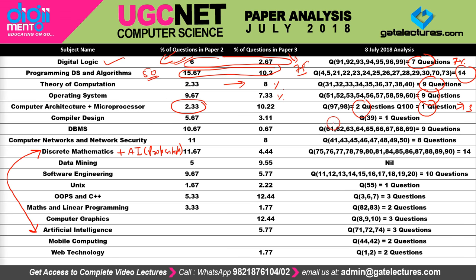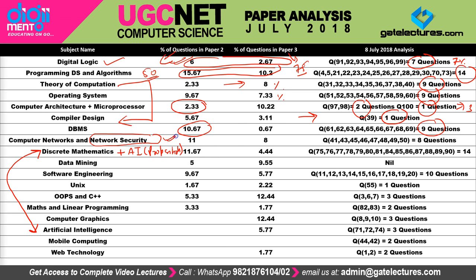In compiler design, only one question was asked. Generally compiler design is counted with theory of computation since they are studied together, but this time only one question was asked from compiler design, so the percentage has dropped. In DBMS, nine questions are asked — similar to before. In computer networks and network security combined, I've added both portions together and they asked a total of eight questions, so no huge change there either. Network security is considered part of computer networks.